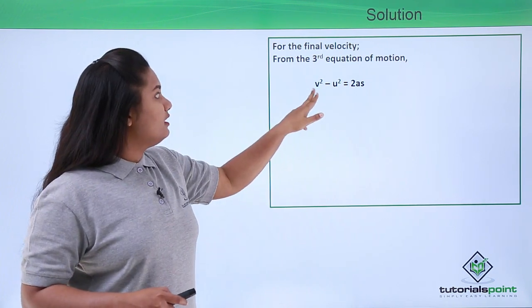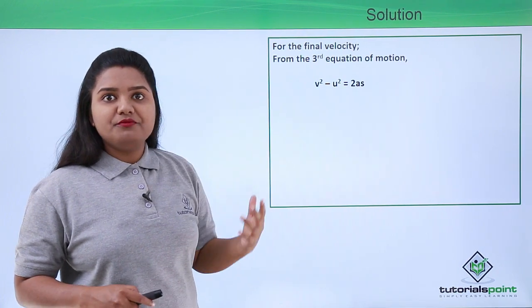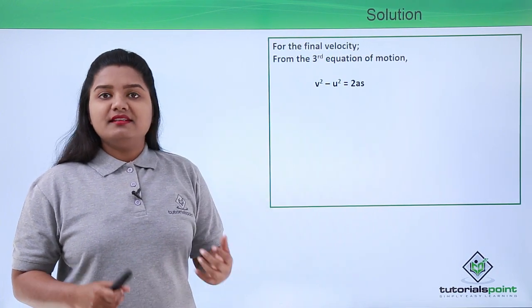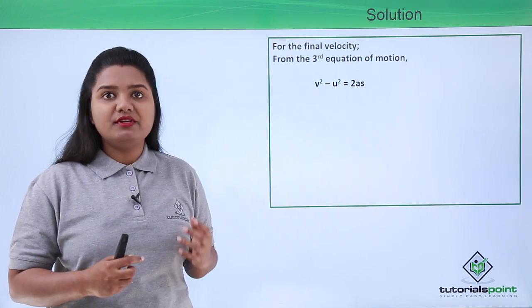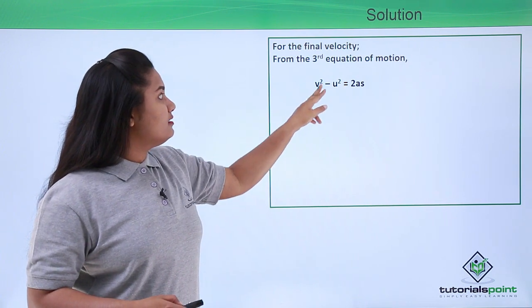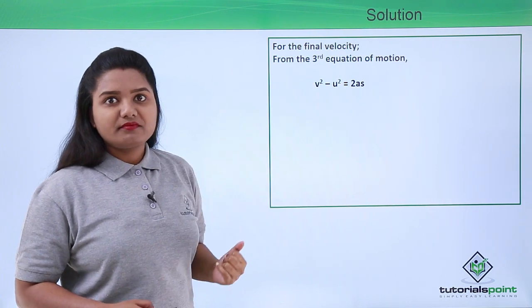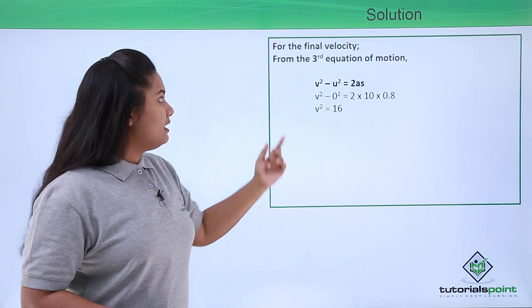The only unknown quantity here is v, the final velocity, which is the velocity the dumbbell has just before touching the ground. Let us put in the values we know and figure out what the value of v is.